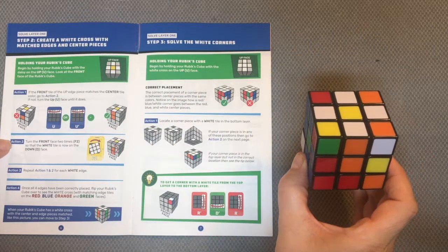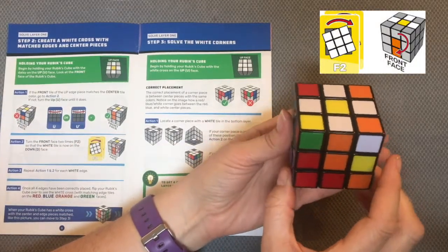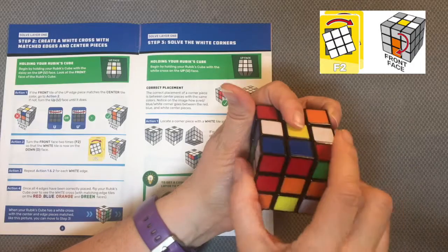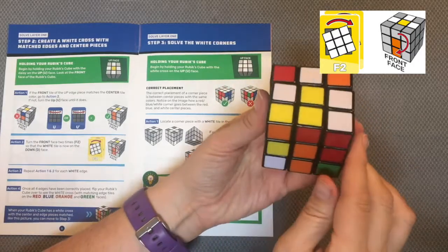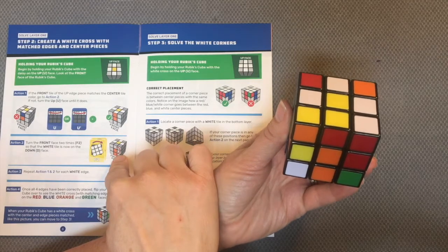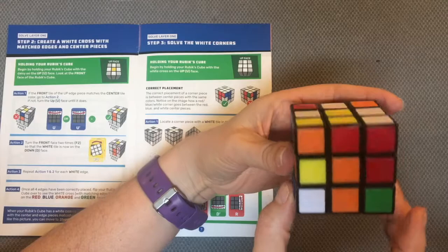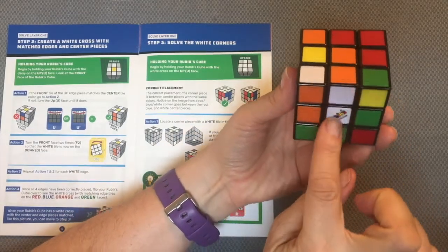Action 2 tells me to take my front face and turn it two times. One, two, and now I have my two orange down below just like I see here. What I'm looking for is the white cross. I can peek at my down face and there I see I'm starting to build it.